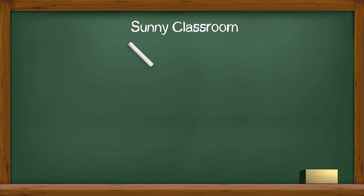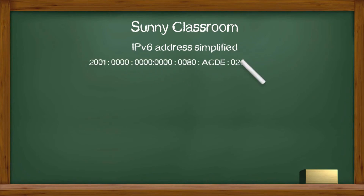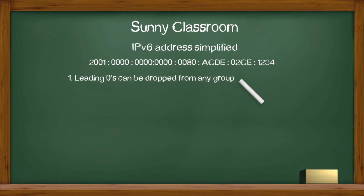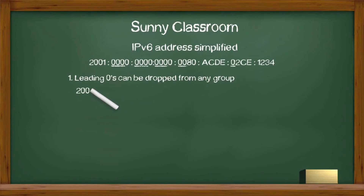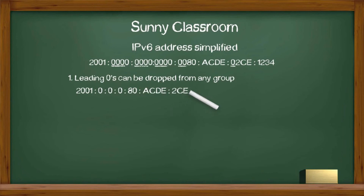How to simplify an IPv6 address. IPv6 addresses are very long and much more complicated than IPv4. Here is a 3-step method. Step 1: leading zeros can be dropped from any group. Here we have 5 groups with leading zeros. Thus the 2nd, 3rd, and 4th groups are simplified to 0, 0, 0. The 5th group is simplified to 80, and the 7th group is simplified to 2CE.